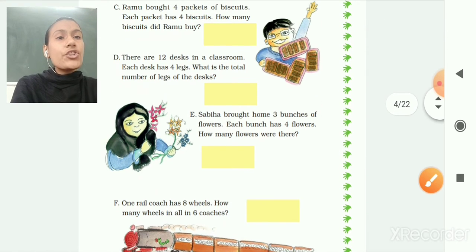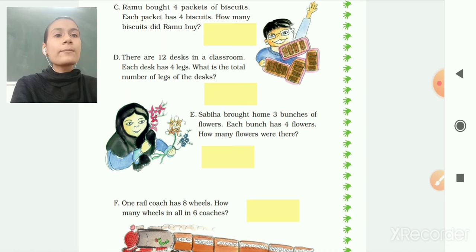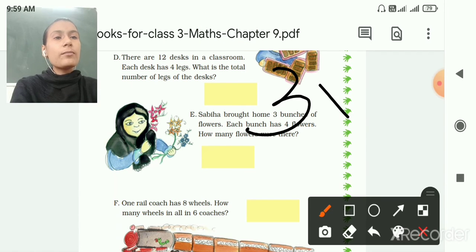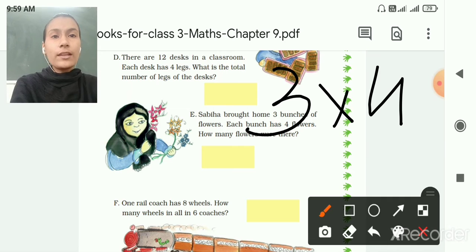Then Shabihah brought home 3 bunches of flowers. Each bunch has 4 flowers. So how many flowers were there? How many bunches? Each bunch has 4 flowers and how many bunches? 3 bunches. So 3 multiply by 4 is equal to 12.